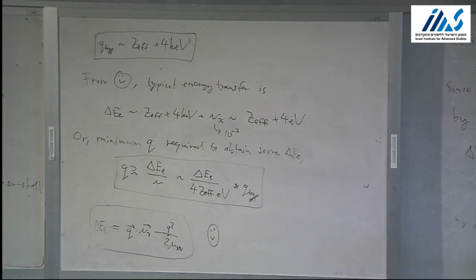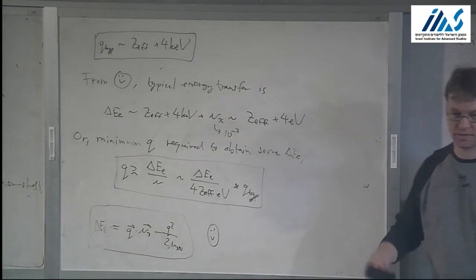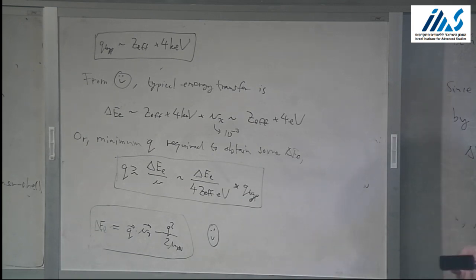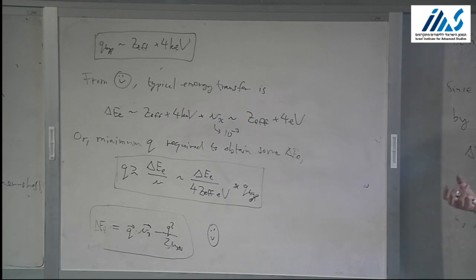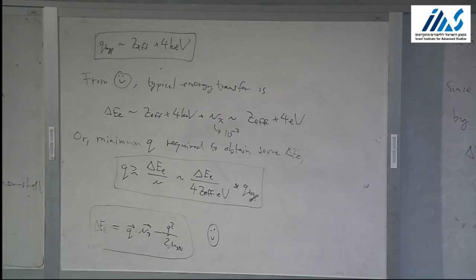Why couldn't we deposit all of the dark matter energy with nuclear recoil? For the nucleus, it's heavy — it's basically stationary in the lab frame. The electron is not. In the lab frame, the electron is moving at velocity alpha. Another way to think about the dark matter-electron scattering problem is that you have a heavy dark matter particle sitting there, and your atom goes around the galaxy and hits the dark matter and bounces off it. So the electron basically just bounces off the dark matter particle.